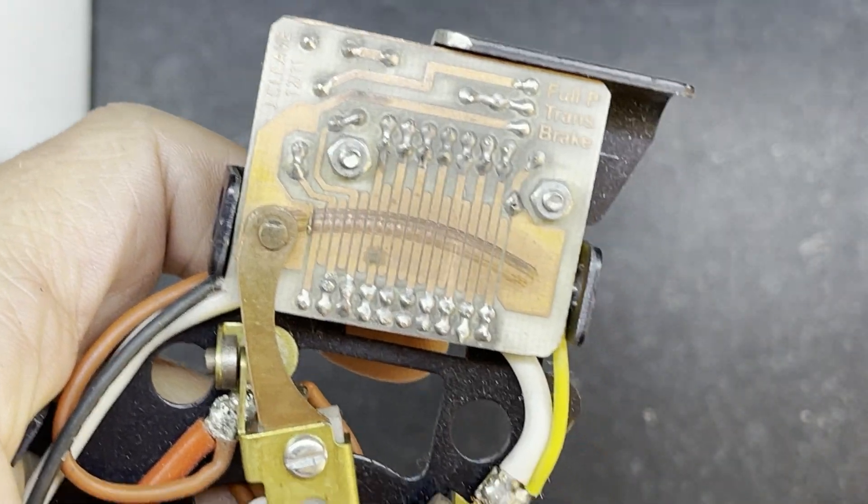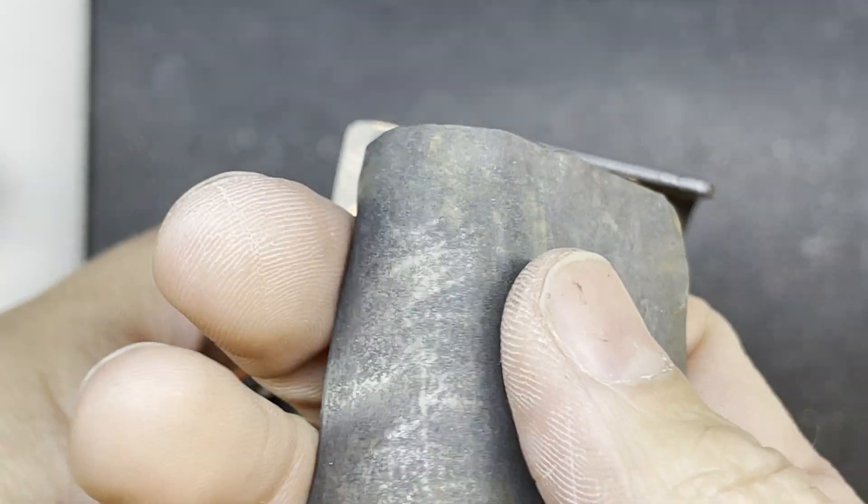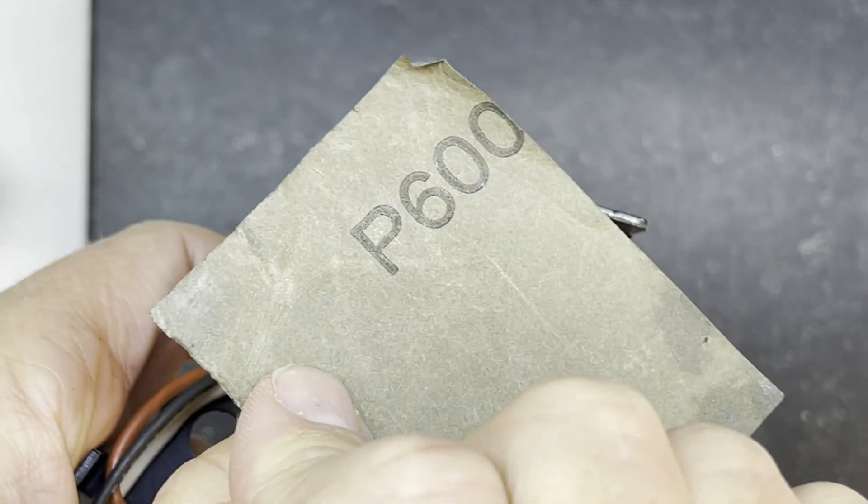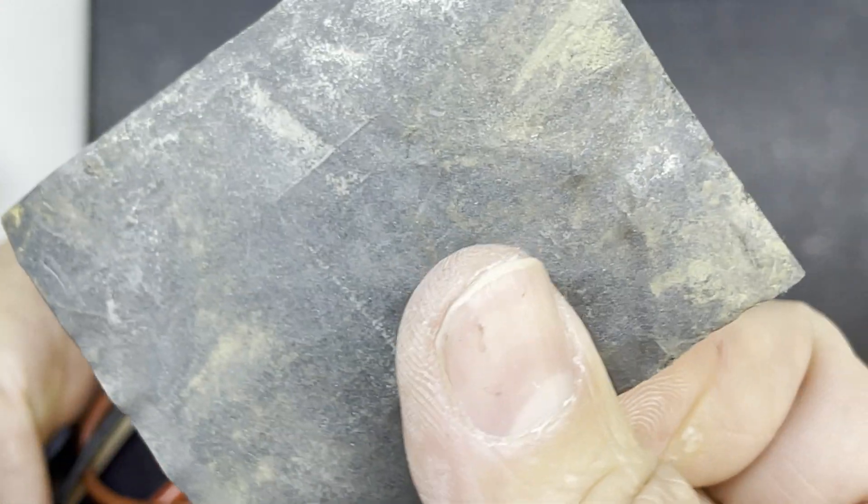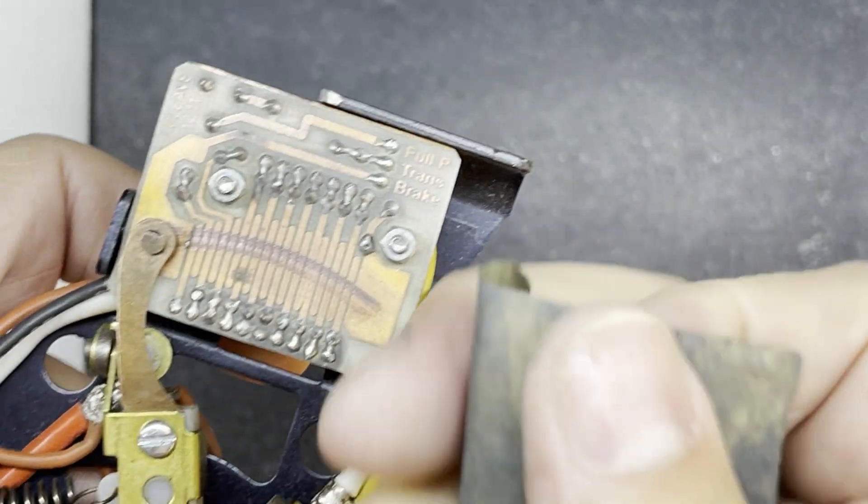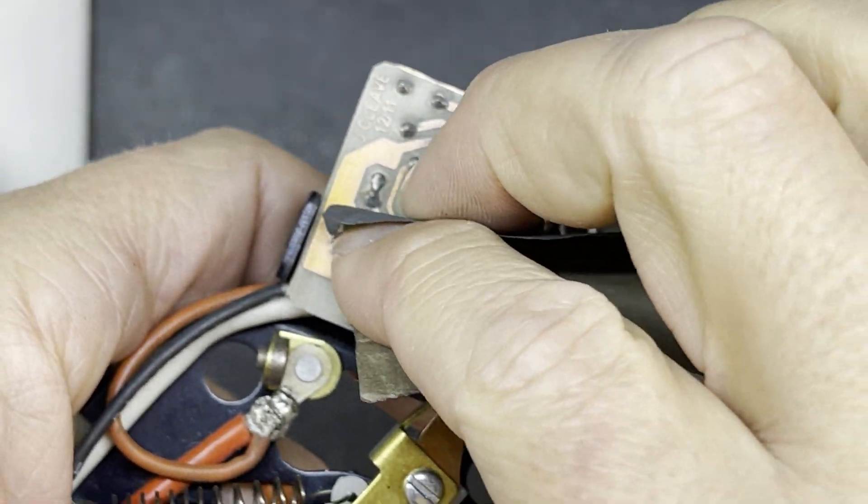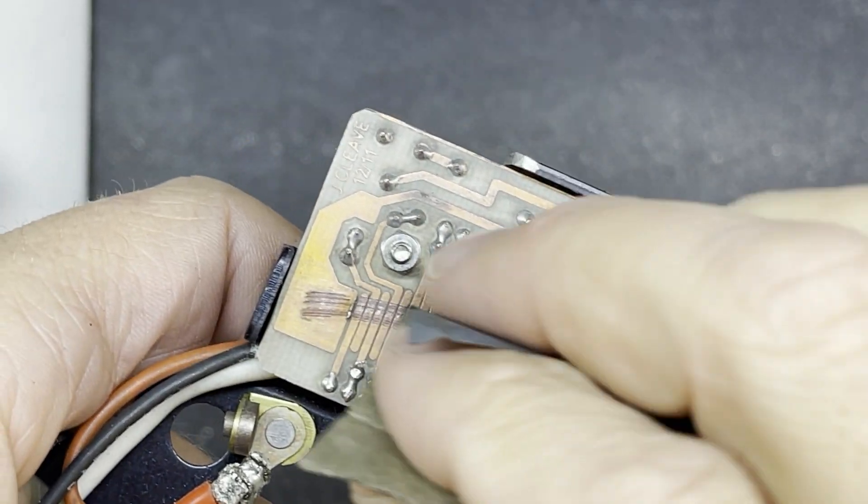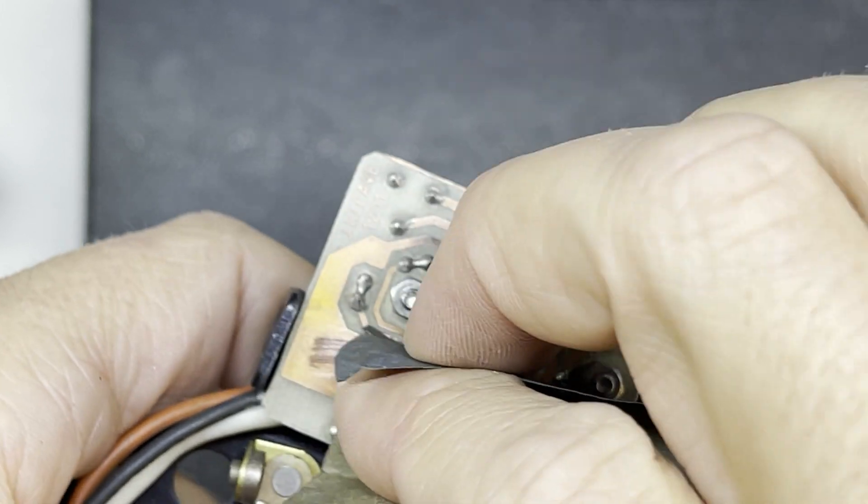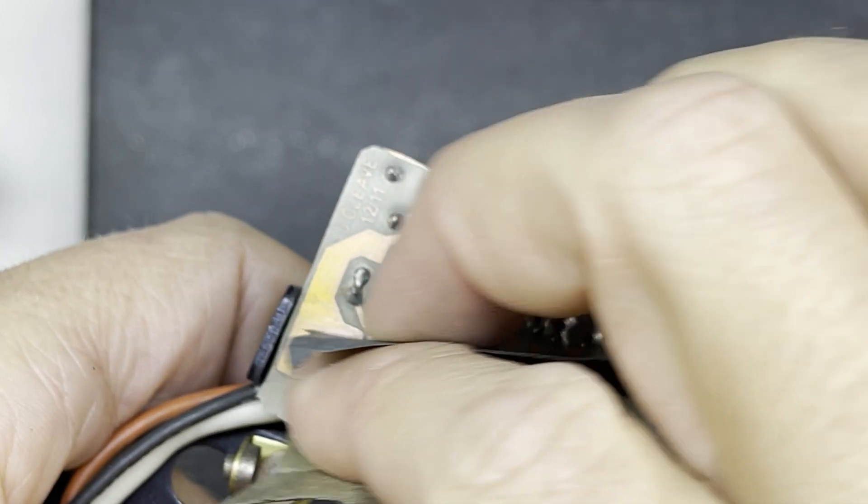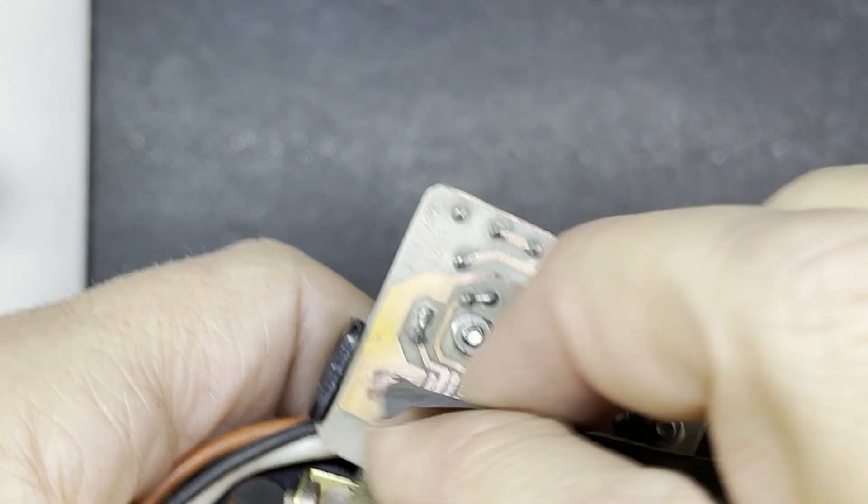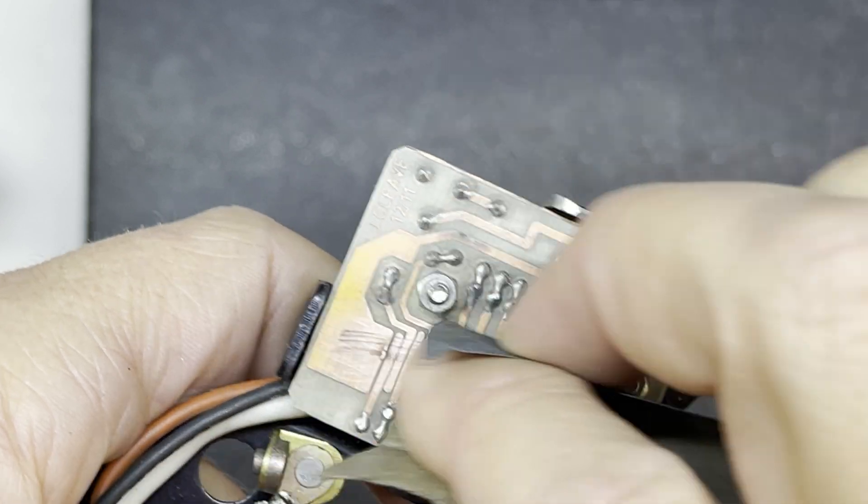But to smooth that out, I'm going to take a bit of really fine old wet and dry. It says it's 600 grit, but it's well worn out, this stuff, so it's probably not 600 grit anymore. And I'm just going to go over the area where the wiper passes over. So you can see, I'm just going to rub it over this area here, especially the bit that's got the little burnt area. I'm just going to use the wet and dry to clean it up.